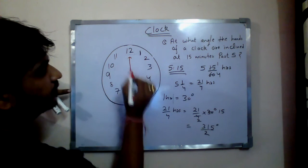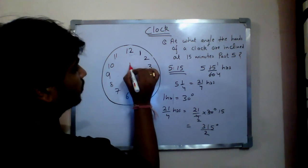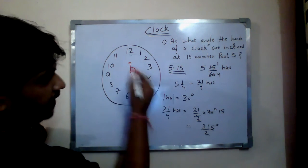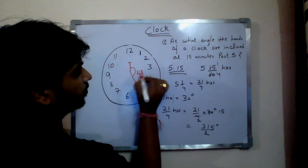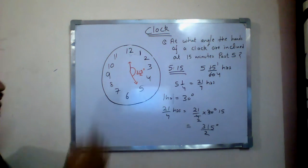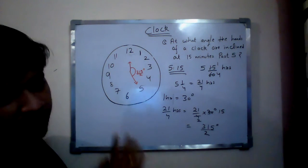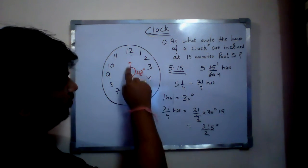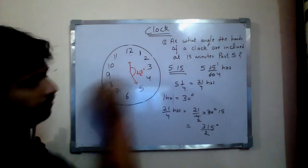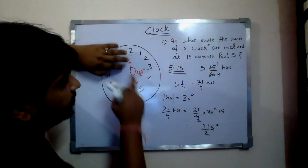This value indicates the travel of the hour hand from the reference point. The angle travelled by the hour hand from the reference point is 315/2 degrees. We always take 12 o'clock as the reference point, so from the reference point the angle travelled by the hour hand is 315/2 degrees.